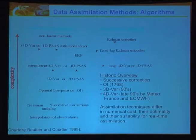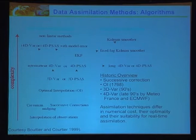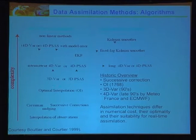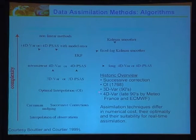The big schematic of data assimilation methods includes variational methods — 3DVar and 4DVar developed around the 90s — optimal interpolation, the extended Kalman filter, Kalman Smoother, and fixed lag Kalman Smoother. Historically: first we had successive correction, then in 1768 optimal interpolation, around the 90s 3DVar minimizing a cost function, and in the late 90s 4DVar, which is very popular in European centers.